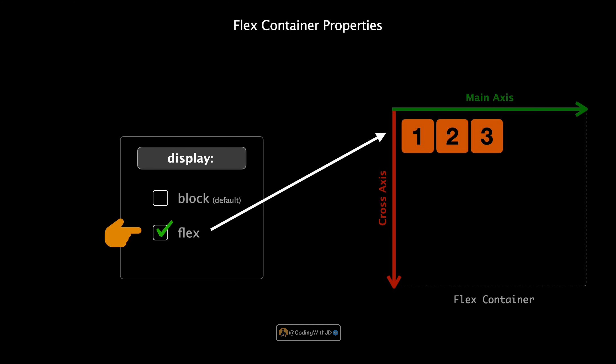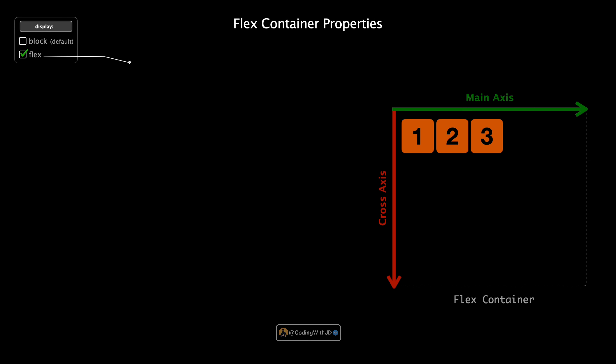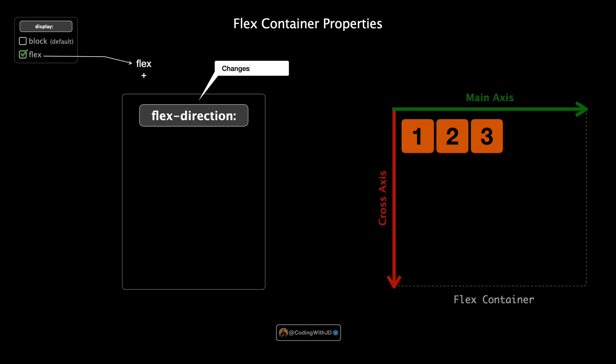This is the first step in using flexbox to organize your elements. With this foundation we can explore more advanced properties to control spacing, alignment, and order of items within our flex container. Now that our flex container is set up with display flex, let's explore how we can change the direction of our items with the flex-direction property. This property is super handy for adjusting layouts without having to rearrange any HTML code. The flex-direction property controls how items are placed in the flex container, essentially adjusting our main axis.